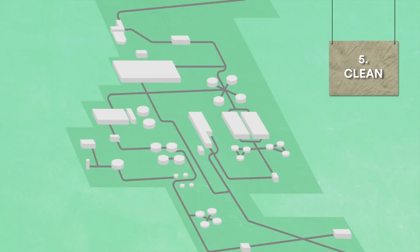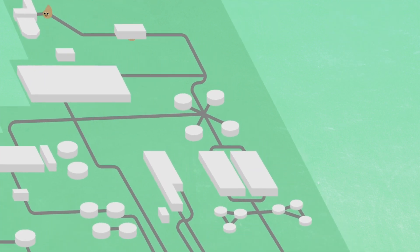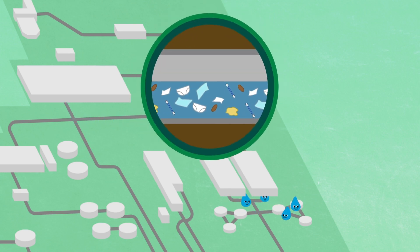5. Clean. The wastewater makes its way to one of our 566 wastewater treatment works. Here there are a number of processes the wastewater will go through in order to be treated and we get rid of the things that shouldn't have been flushed down your loo.